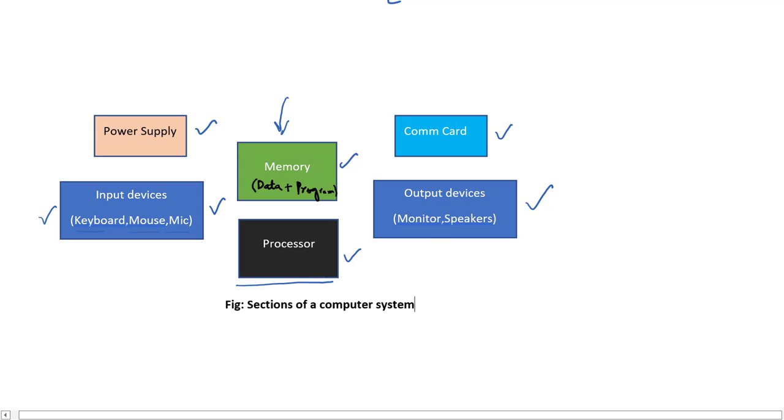The processor processes the raw data coming from these input devices based on the program stored in the memory and sends output signals to monitor and speakers. There's a communication card and its purpose is to send the data from this computer to a network.